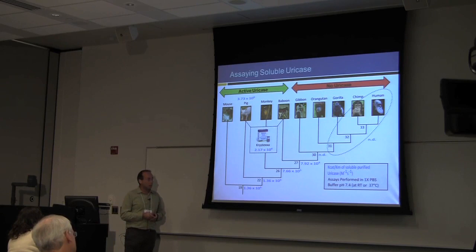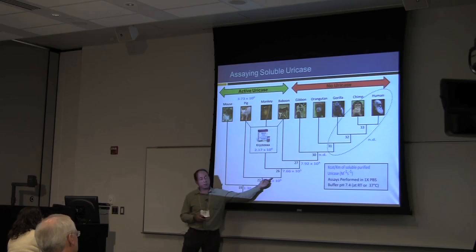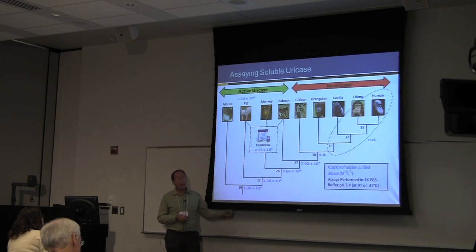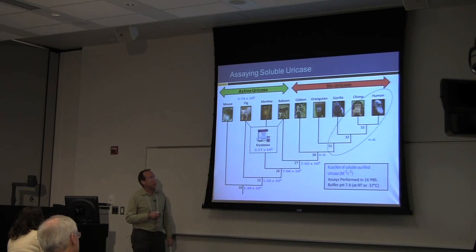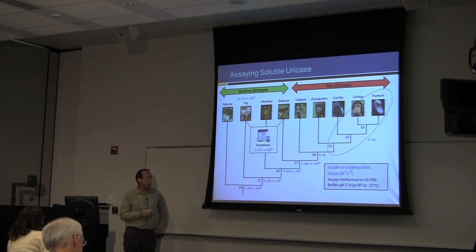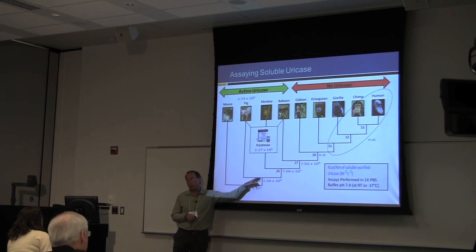When we solubilize our ancient uricases and measure KM to get an idea of catalytic efficiency, we see a precipitous drop in enzymatic activity of the ancient uricases as we move toward humans. Starting with pigs at about 3×10⁶, Crystexa — the pig-baboon chimera — is about 2×10⁶, and our most active ancient uricase is about 1×10⁶. But traveling along the evolutionary branch leading to humans, we see a big hit in catalytic efficiency, going from ~10⁶ down to 10⁵ then 10⁴, until we could not determine the catalytic efficiency because we couldn't solubilize them.